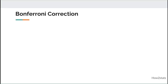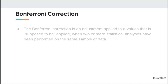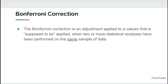Now the Bonferroni correction comes into play. The Bonferroni correction is an adjustment applied to p-values that is supposed to be applied — and that's leading to that second video about whether you really need to apply a Bonferroni correction in any particular scenario.